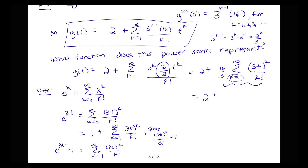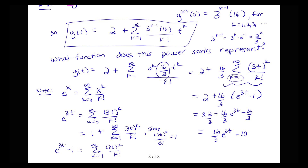The sum from k equals 1 to infinity of (3t)^k over k factorial equals e^(3t) minus 1. Combining all pieces together, we have 2 plus (16/3)(e^(3t) minus 1), which equals 2 plus (16/3)e^(3t) minus 16/3. Combining 2 and minus 16/3, we get y(t) equals (16/3)e^(3t) minus 10/3. That is the function that solves our differential equation.